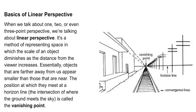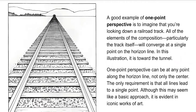When we talk about one-, two-, or three-point perspective, we're talking about linear perspective — a method of representing space in which the scale of an object diminishes as the distance from the viewer increases. Objects further away appear smaller, and the position at which they meet at the horizon line is called the vanishing point. A good example of one-point perspective is imagining you're looking down a railroad track — all elements converge at a single point on the horizon line. The one-point perspective can be at any point along the horizon line, and the only requirement is that all lines lead to a single point.